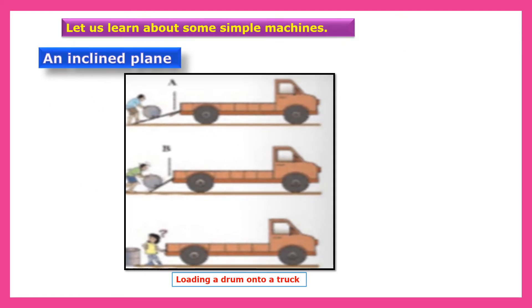Now let us learn about some simple machines. First simple machine is an inclined plane. A heavy drum is to be loaded onto a truck. Rave chose the plank A while Hamid chose the plank B. Rahe did not use a plank at all. Who would find the drum heaviest to load? Who would find it lightest? Which one of the planks A and B is longer? Which one has a steeper slope? What can we conclude from this?